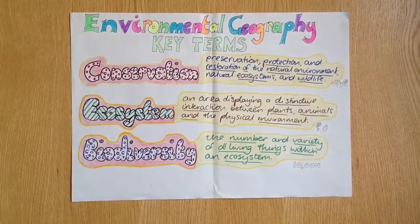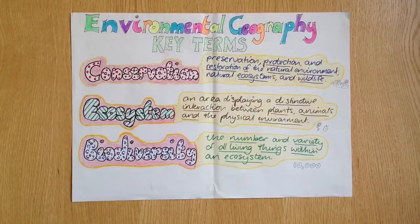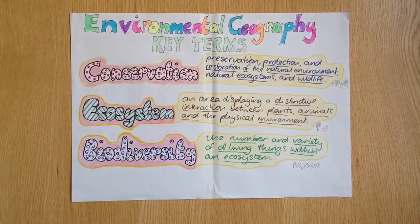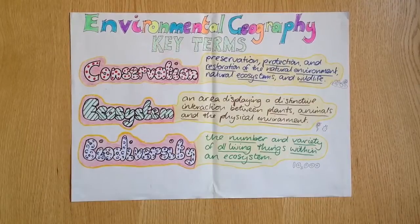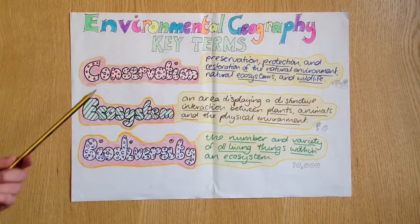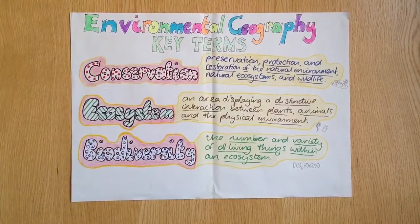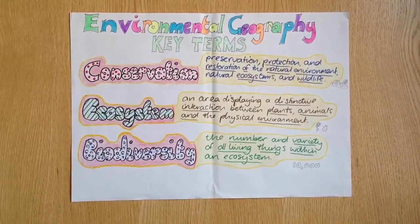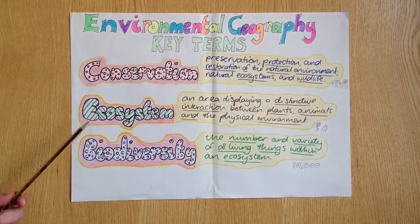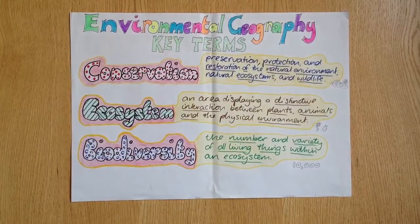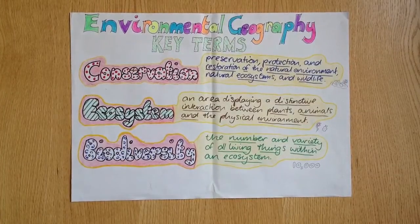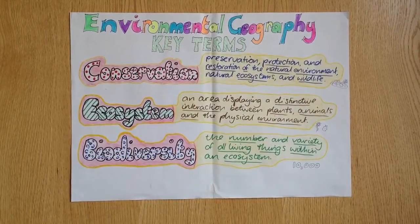There are a few key words to understand in environmental geography. Conservation is the preservation, protection, and restoration of the natural environment, natural ecosystems, and wildlife. Ecosystem is an area displaying a distinctive interaction between plants, animals, and the physical environment. Biodiversity is the number and variety of all living things within an ecosystem.